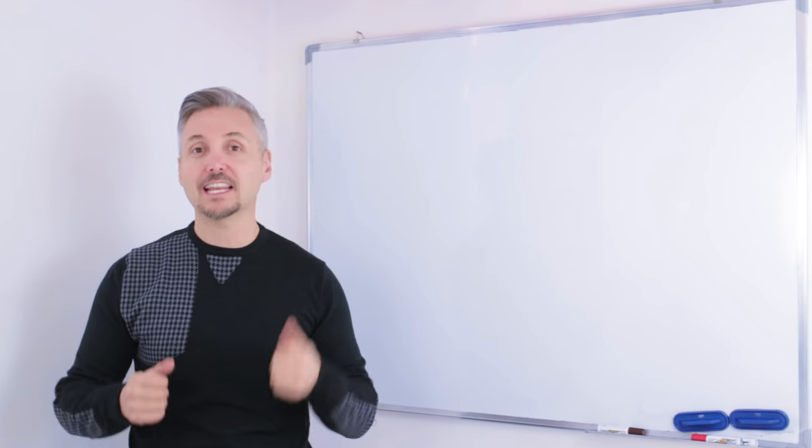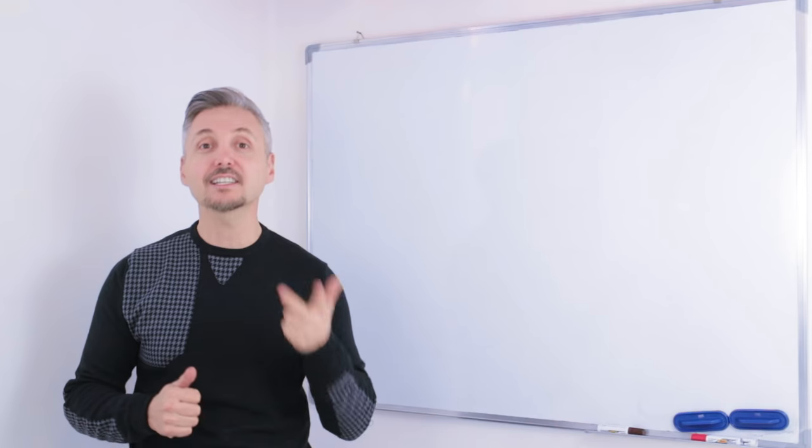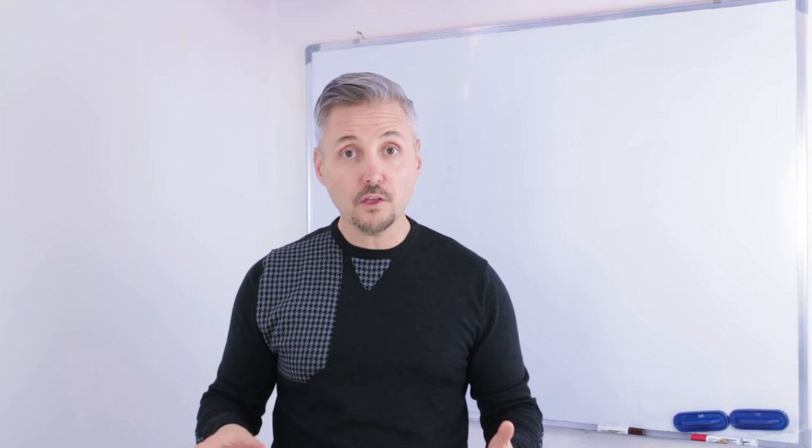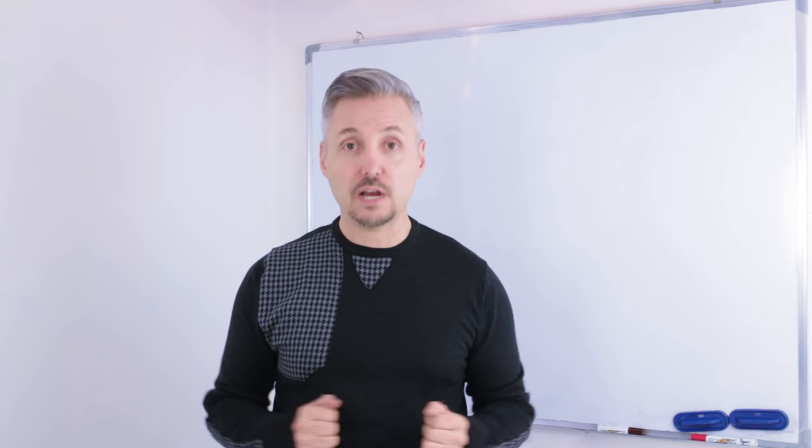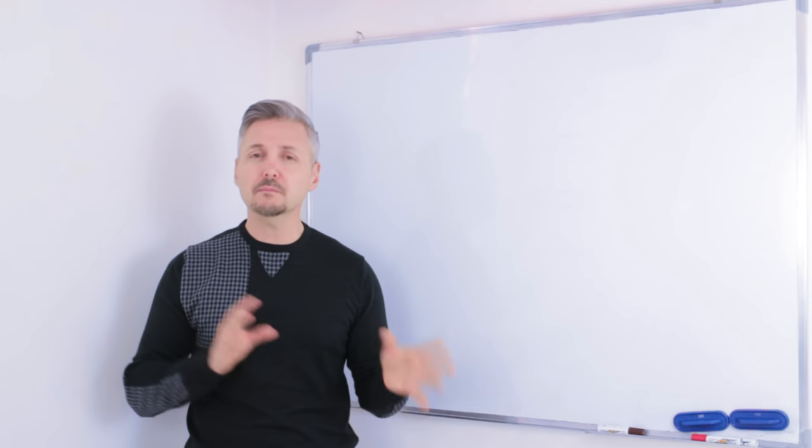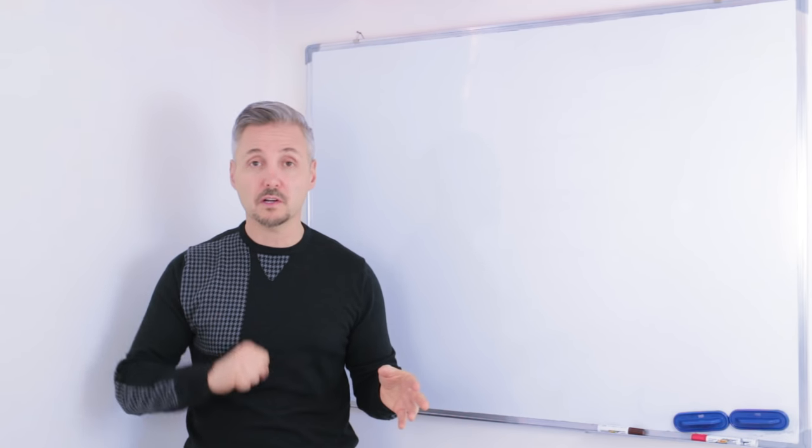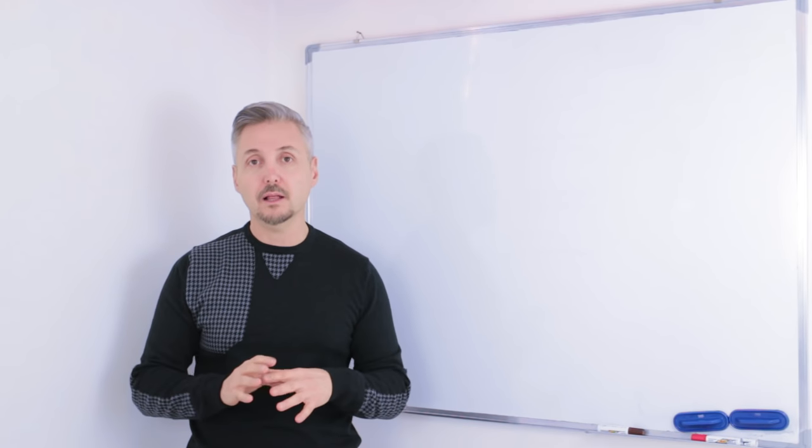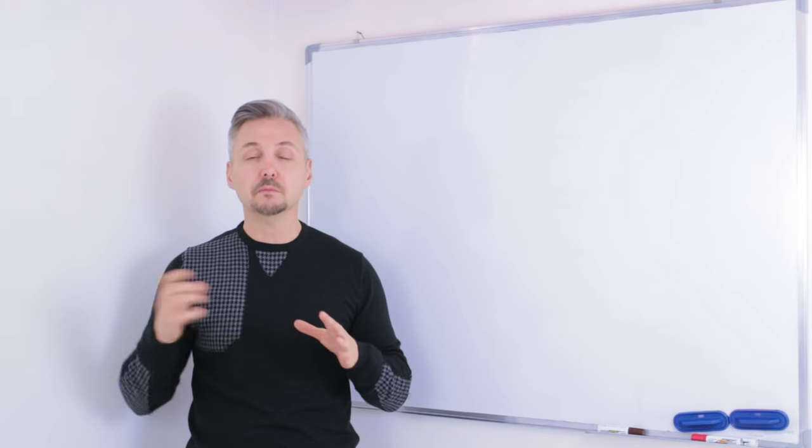In this lesson, we took a look at yet, already, just and still. They are all used with the present perfect, simple or continuous. Still, though, can also be used for the future and for the present. Pay attention where you place the adverb of time. Sometimes it can be before the past participle or at the end of the sentence. Or, still, can be sometimes placed before the auxiliary verb. Great.